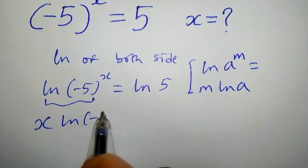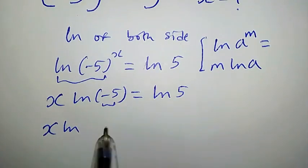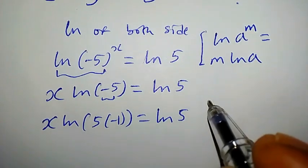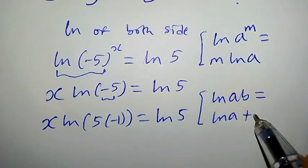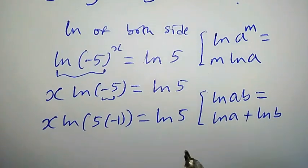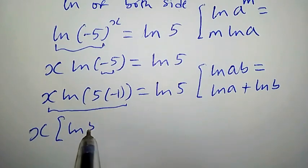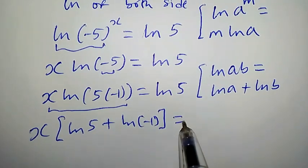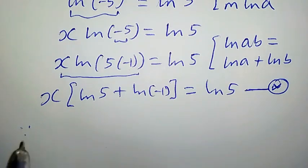x · ln(-5) can be written as x · ln(5 · (-1)) = ln(5). Also, from the rules of logarithm, there is another property: ln(ab) = ln(a) + ln(b). Applying this, we have x · [ln(5) + ln(-1)] = ln(5). Let us represent this equation as equation star.